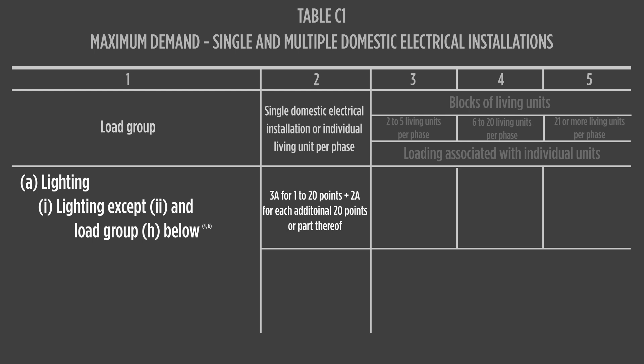How do you calculate the maximum demand in a single-phase domestic installation? Let's begin with our first load group: lighting. The notes attached to table C1 define a lighting point load as 60 watts. Table C1 allocates 3 amps for 1 to 20 lighting points, and 2 amps for every additional 20 points in a single domestic dwelling. With the introduction of energy efficient lighting, an equivalent loading can be obtained by dividing the connected load wattage by 60 to get the equivalent number of points for calculation.